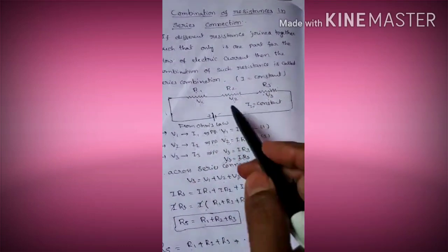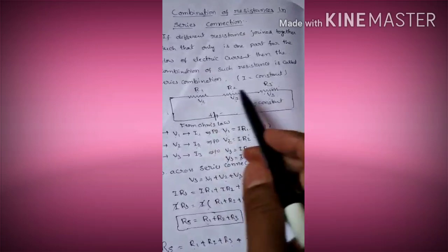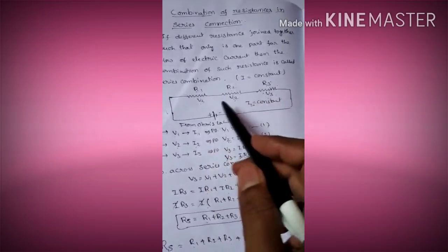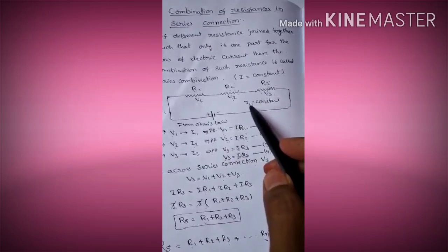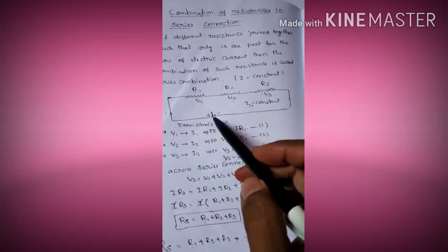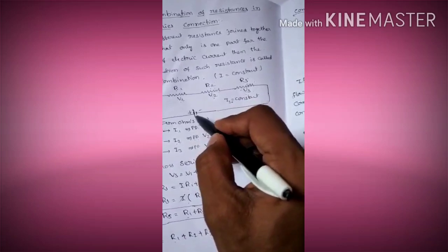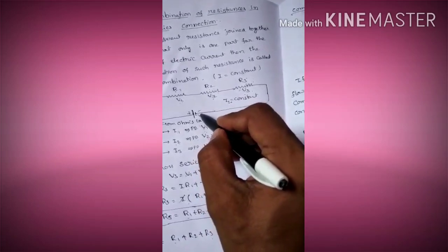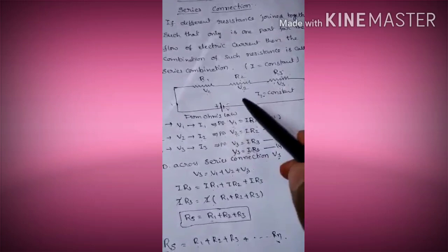If you are adding resistances like that, it is called a series connection. Here, I is constant and V is varied. I am taking the voltage as V.